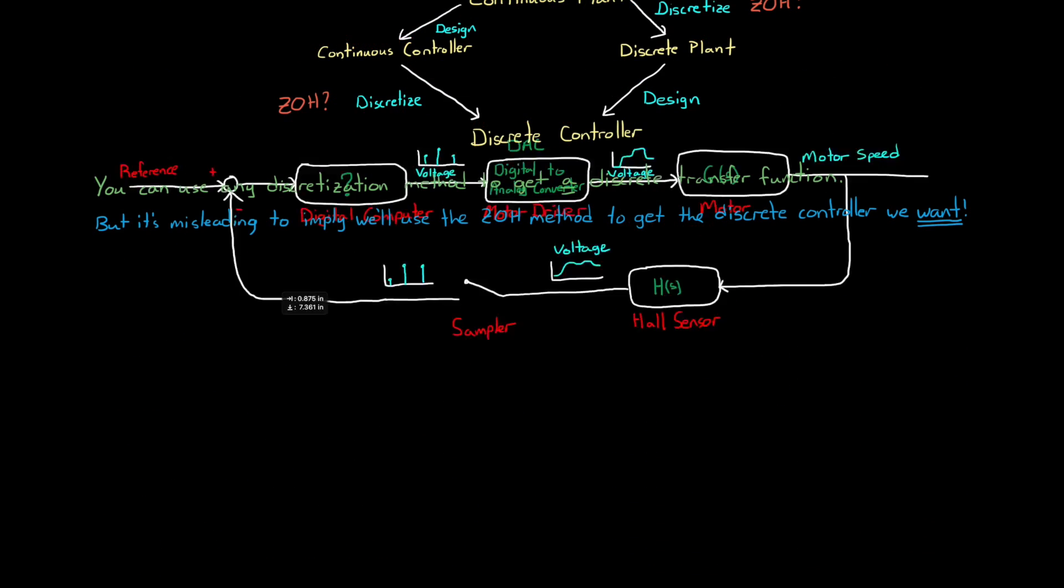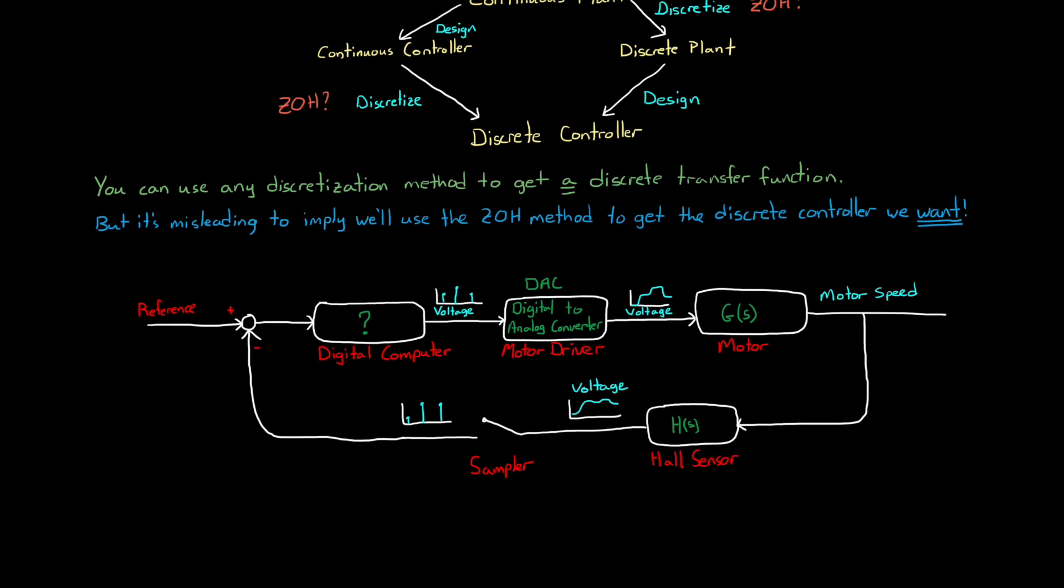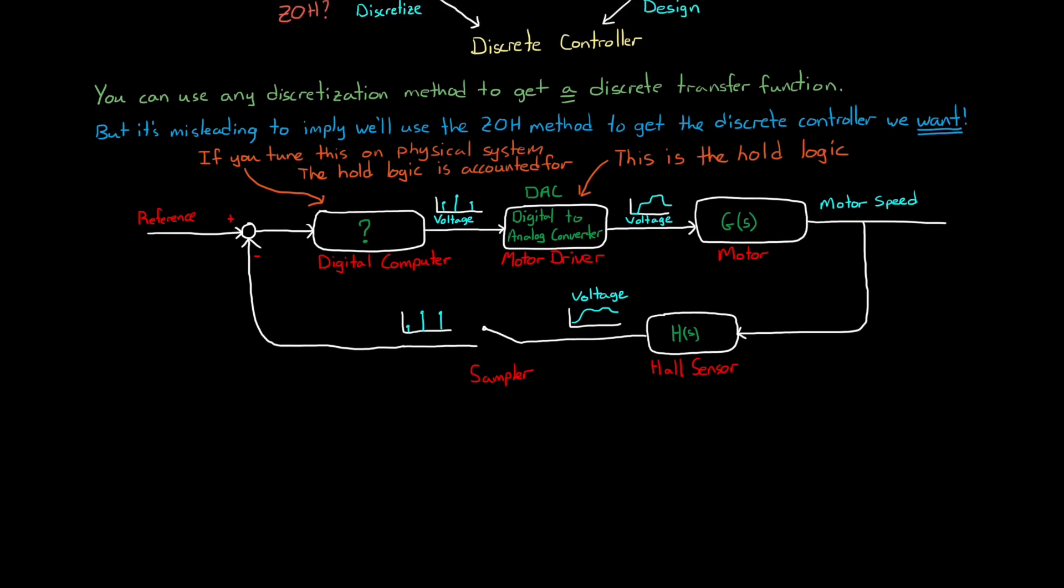Well, let's refer back to the block diagram. The key here is understanding where the hold logic exists so that we can account for it properly in our design. Now, in the real world, that hold is performed by the physical implementation of the digital to analog converter, or the motor driver in this case. So if you have a physical setup of your system, and you're designing and tuning your controller on that hardware, then you're already accounting for the hold logic since it's just part of the system.